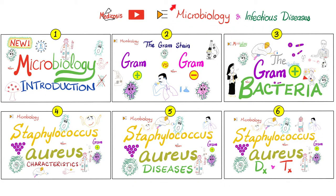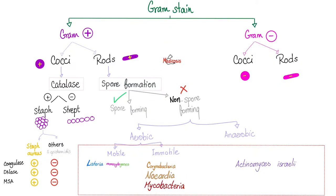Please watch the videos in this playlist in order for maximum understanding and retention. Mycobacteria are immotile, aerobic, non-spore-forming, gram-positive — at least anatomically — rods. But do mycobacteria stain well with gram stain? No, you need an acid-fast stain. Why don't they stain well with gram stain? Thanks to the high lipid content and the mycolic acid.